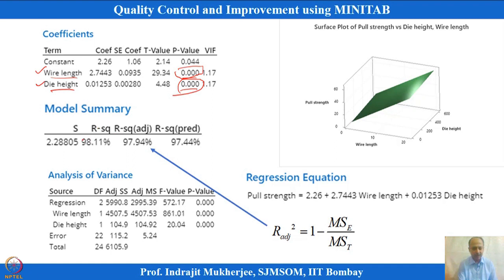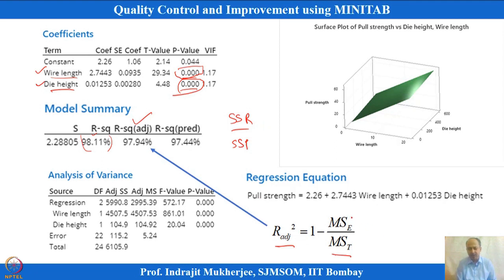The R-squared value represents how much variability is explained — that is, SS_regression divided by SS_total. In this example, R-squared is 98%, which is quite significant. In multiple regression, we focus on R-squared adjusted. R-squared adjusted uses mean square calculations, which prevents overfitting. Simply adding more x variables will increase R-squared, but R-squared adjusted only increases if the new variable significantly reduces mean square error.